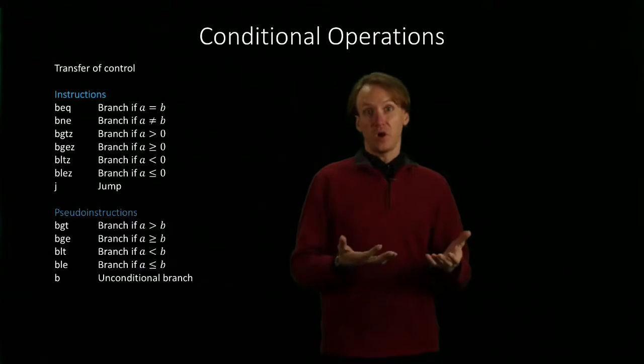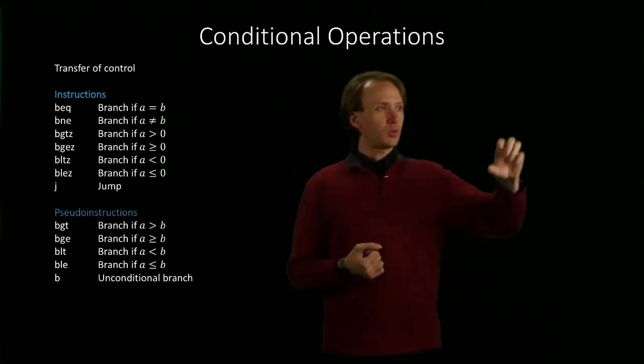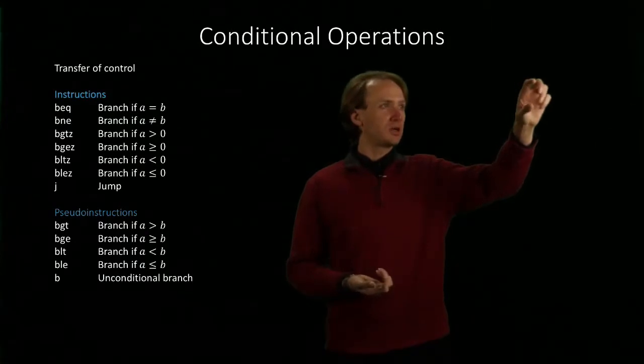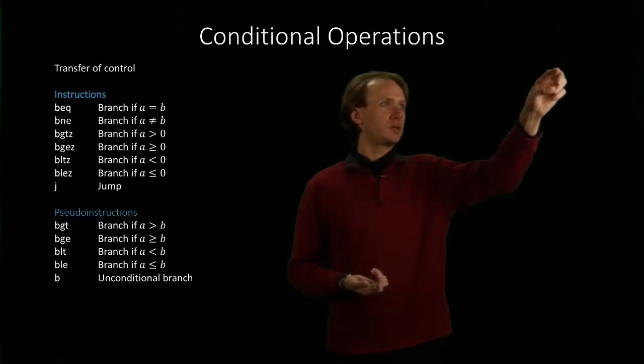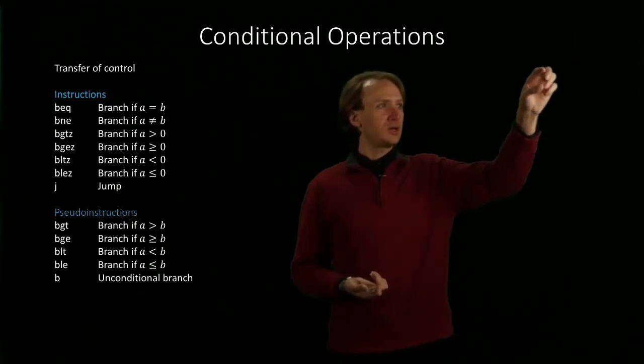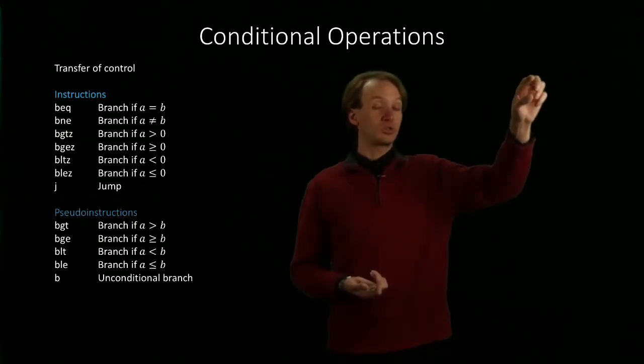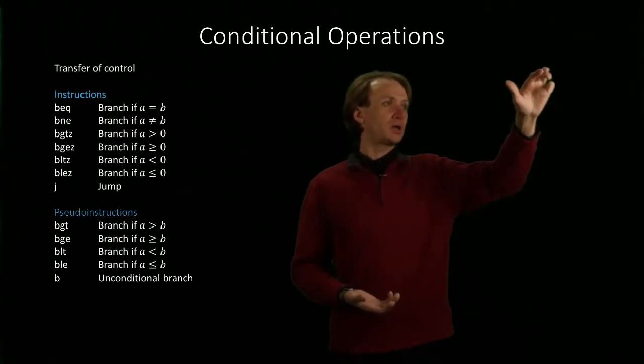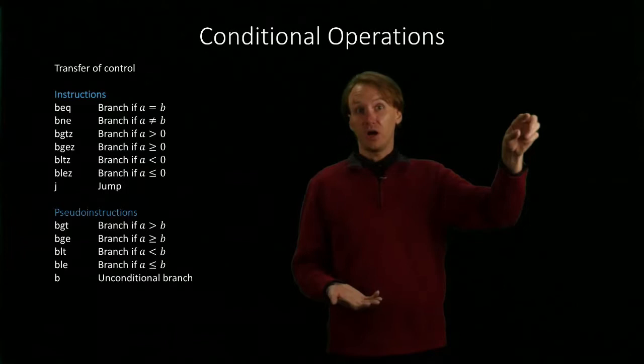So creating an if block is really simple. If we only want to run some block of code if a is equal to b, we might say branch not equal a, b, end if. So then if a is equal to b, then it will just fall through and run this block of code. Otherwise, when a is not equal to b, it skips to the end if label that I've got.